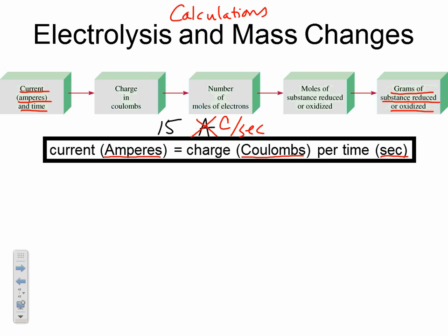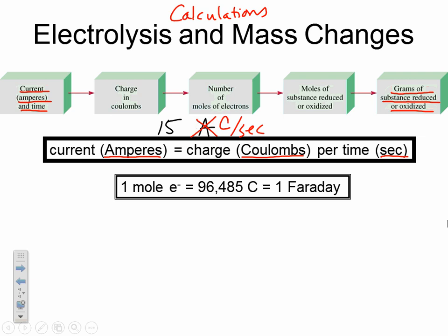We also have Faraday's constant — the same capital F from ΔG = −nFE. Faraday's constant is 96,485 coulombs of charge equal to one mole of electrons. This gives us the critical relationship between coulombs and moles of electrons.